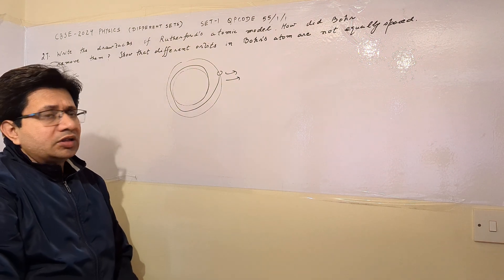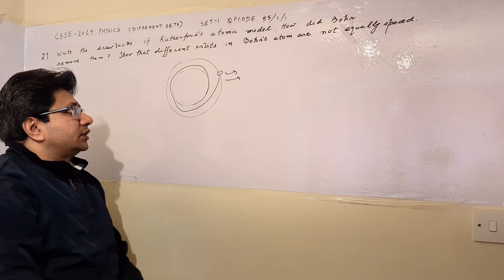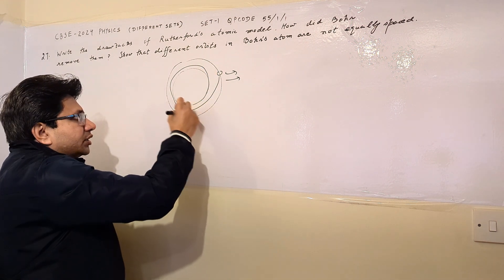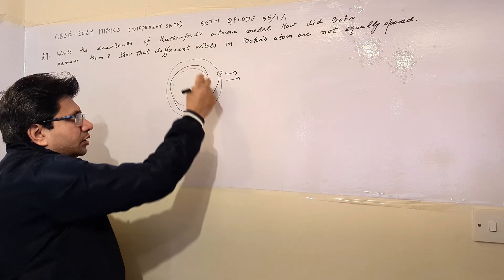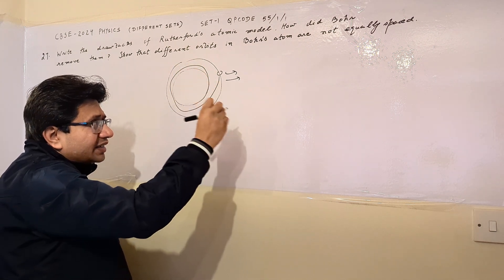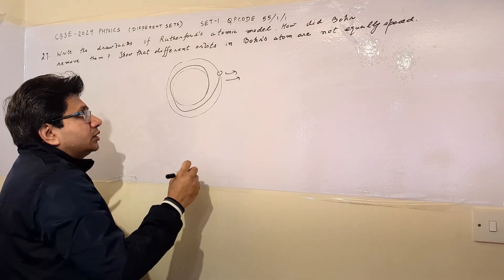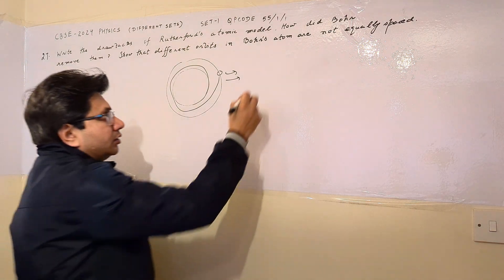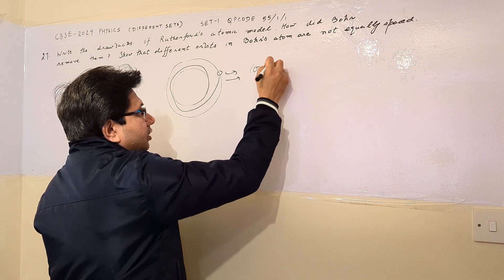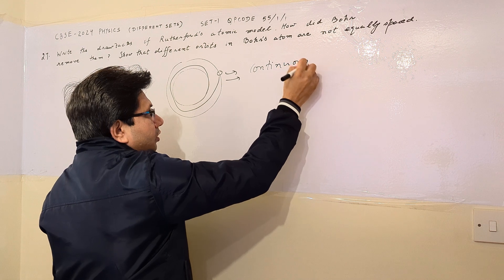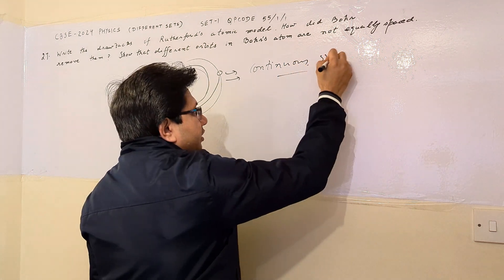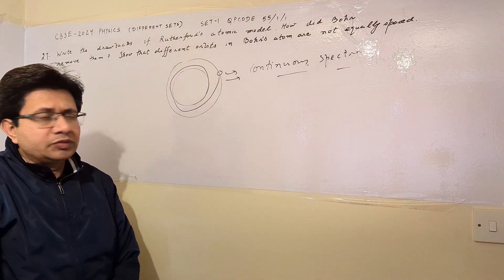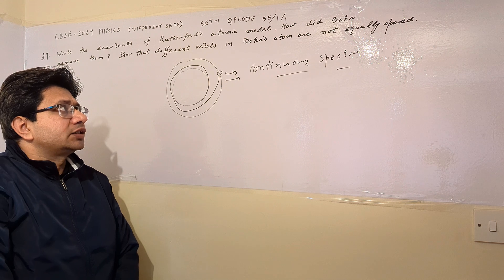The second drawback is that when the charge carrier moves in a spiral path, continuously radiating energy, the spectrum we would get should be a continuous spectrum. According to the Rutherford model, the spectra is continuous in nature, whereas in actuality we observe line spectra. This is another drawback of the Rutherford model.